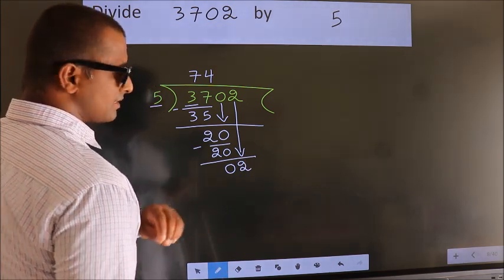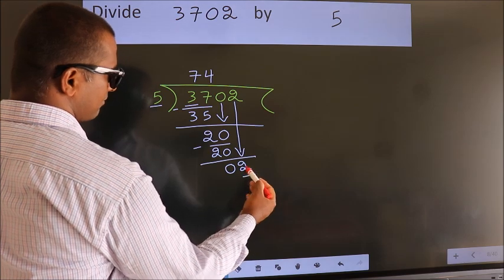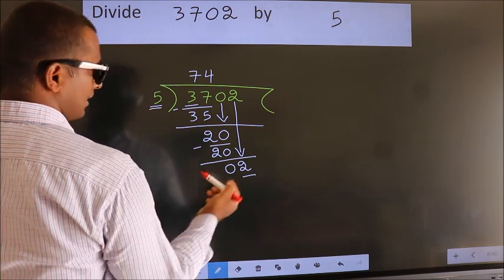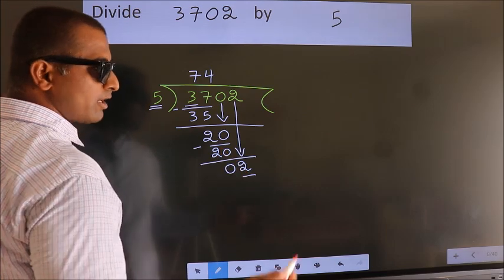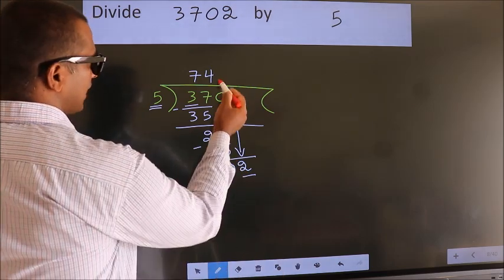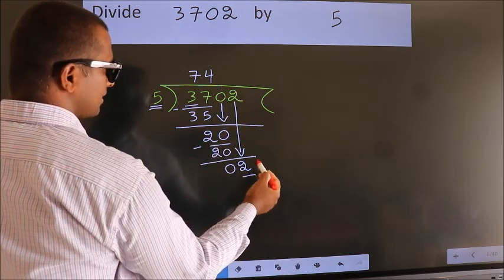And the mistake is this. Here we have 2, here 5. 2 is smaller than 5. So what many do is they directly put dot, take 0.